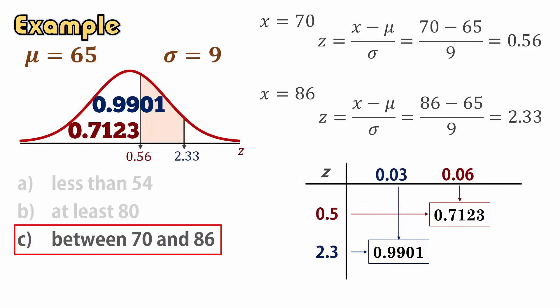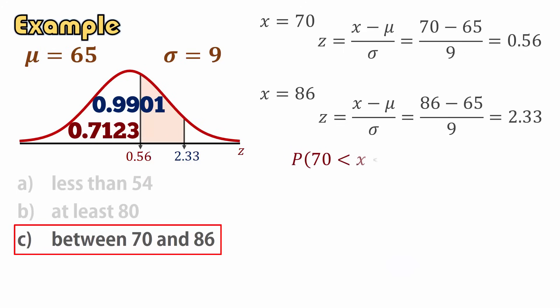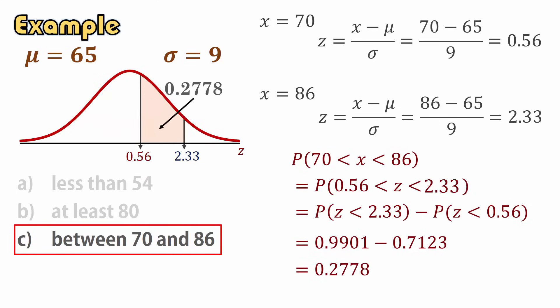So the probability that x is between 70 and 86 is the probability that z is between 0.56 and 2.33. That is 0.9901 minus 0.7123, which gives 0.2778, or 27.78%.